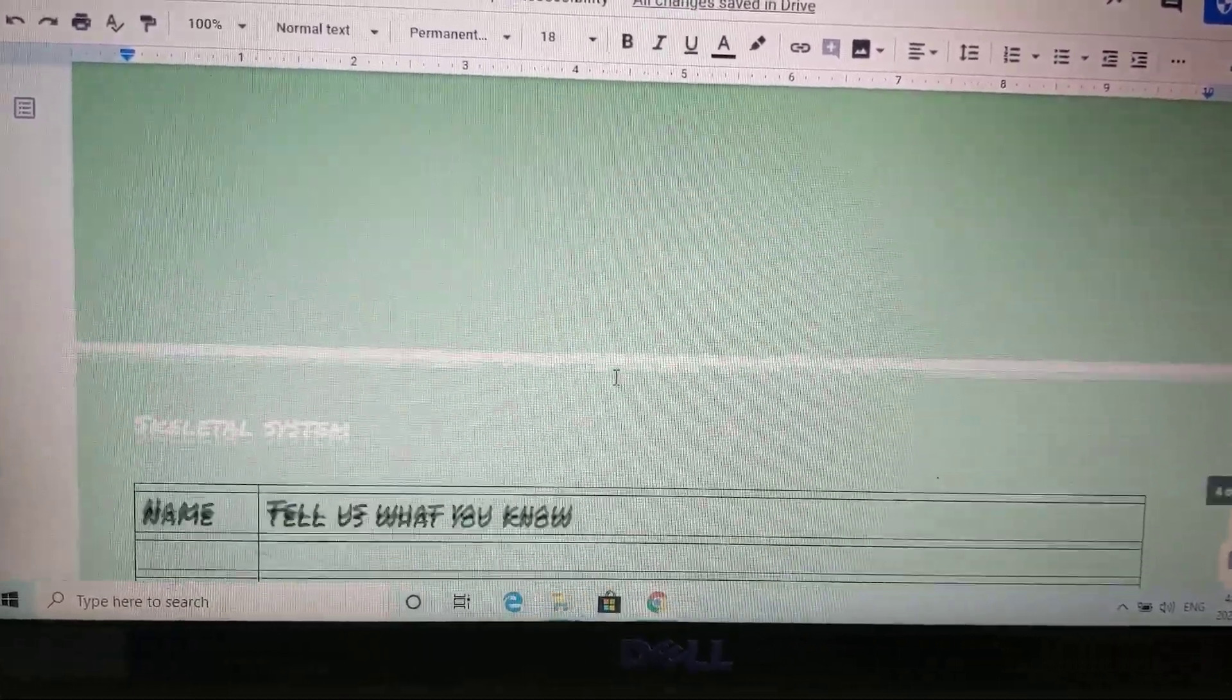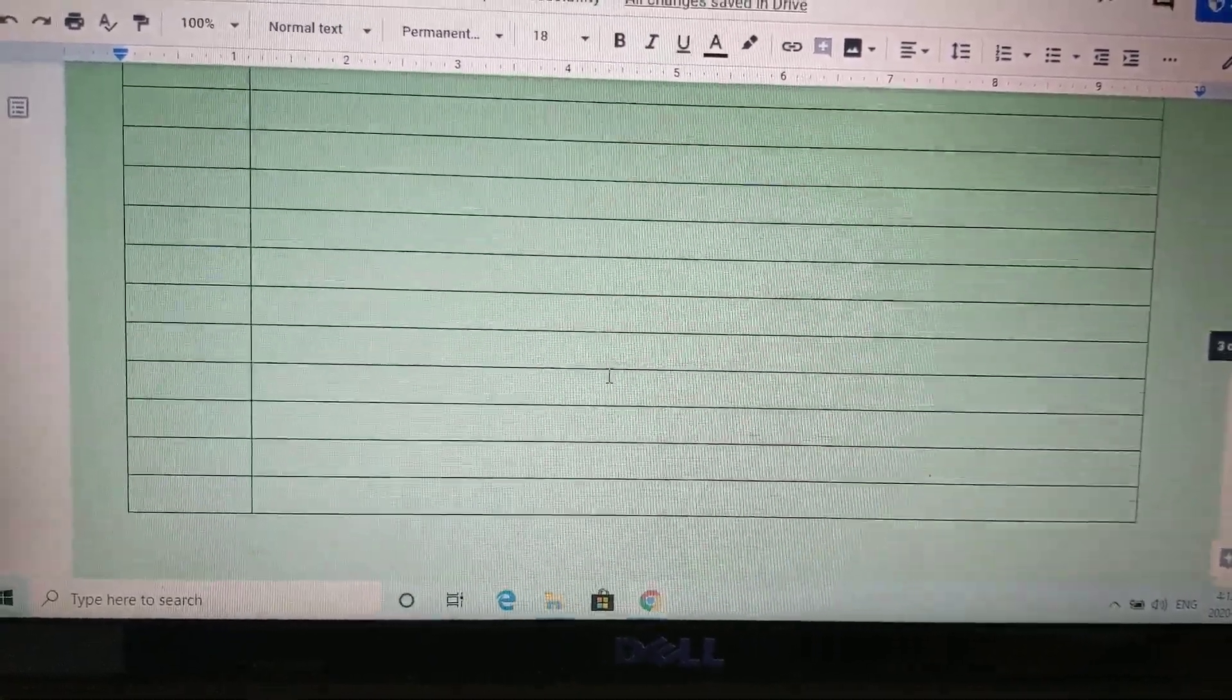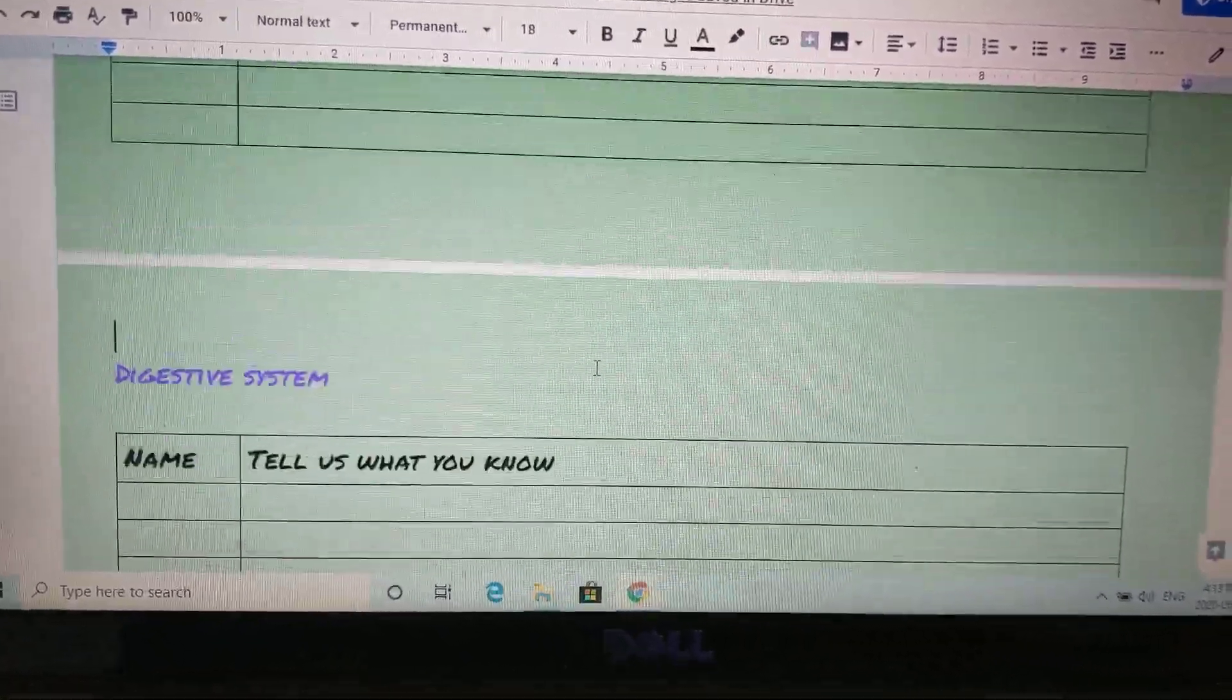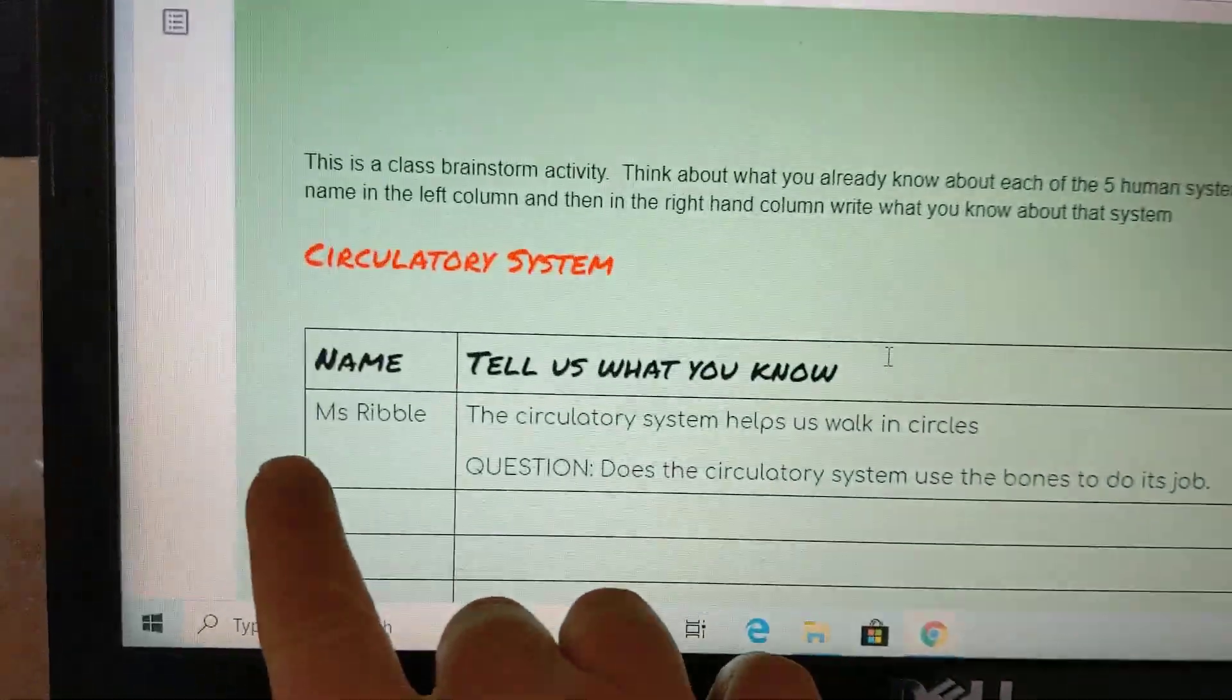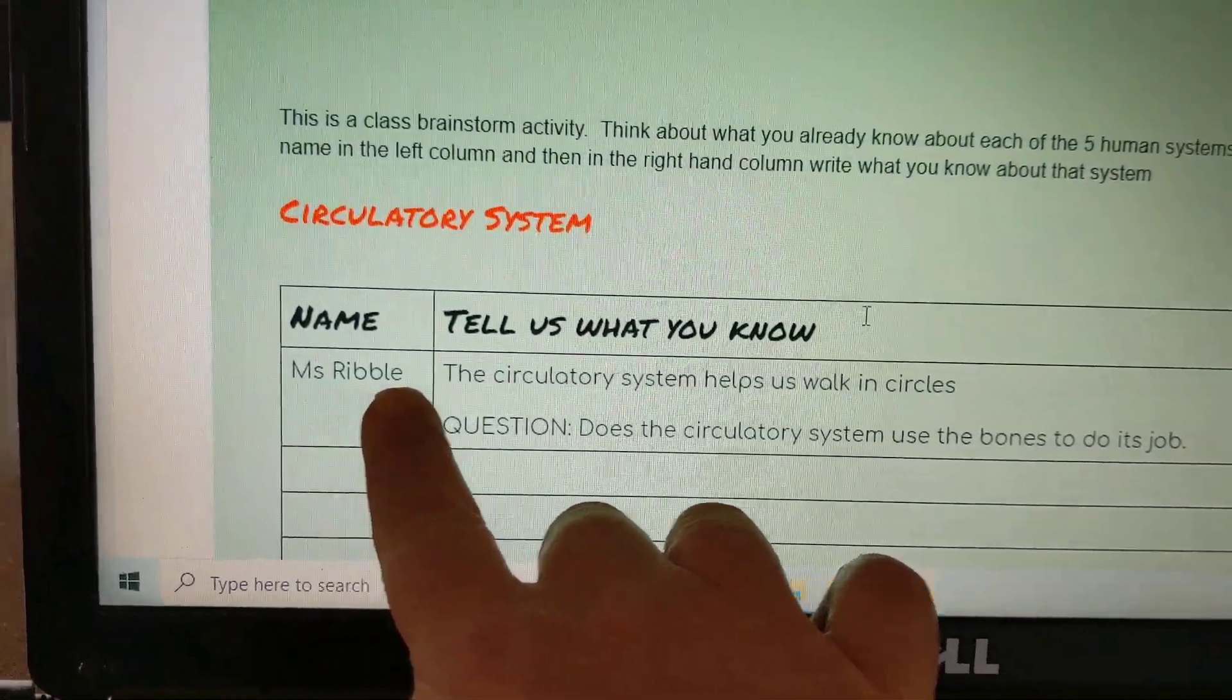We have the nervous system and we have the skeletal system. So what you're going to do here is you're going to write your name. So I wrote my name.